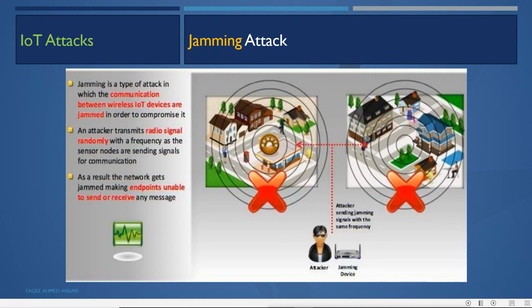Jamming attacks involve transmitting radio signals randomly at the same frequency that sensor nodes use to communicate, causing the network to get jammed and making endpoints unable to send or receive messages. Jamming is often used as a precursor to other types of attacks like sniffing.